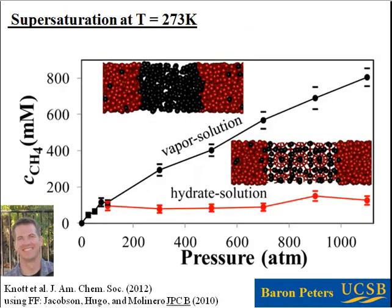We set out with Val Molinaro and graduate student Brandon Knott, working with Mike Dougherty, to really try and probe these nucleation mechanisms. We ran into the problem that it was very difficult to actually compute the supersaturation. Supersaturation is a key parameter in nucleation processes — it's as important for nucleation as temperature is for chemical reaction rates. So we really have to be able to specify what that supersaturation is.